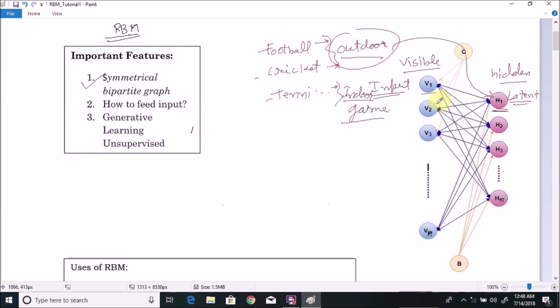Another thing that you can see is there is no connection between visual layer nodes or hidden layer nodes. This is a restriction. That's why it is called Restricted Boltzmann Machine. Due to these restrictions, we can run more efficient algorithms which are not possible with traditional Boltzmann Machine, like gradient based constructive divergences.